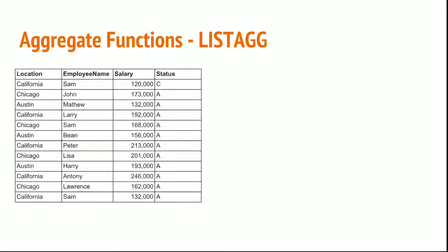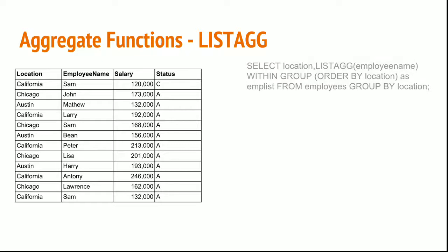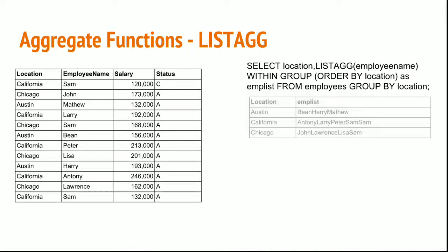LIST_AGGREGATION is one of the important functions within Redshift, as you don't see this function in many other databases. This function will consider the list within a group and list all corresponding group records. The statement SELECT location, LISTAGG(employee_name) WITHIN GROUP (ORDER BY location) orders the employees based on location, groups them, and fetches all employees concatenated in a single row.